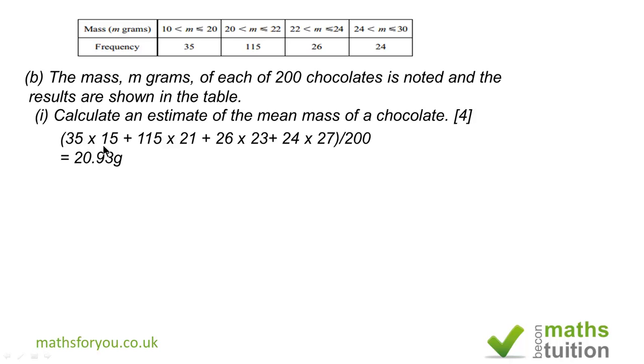So the estimated total mass is going to be 35 times 15 plus 115 times 21, because 21 is the mean interval, 26 times 23 plus 24 times 27. And if you divide all that by 200, you should get that the estimated mean for each chocolate is 20.93 grams.